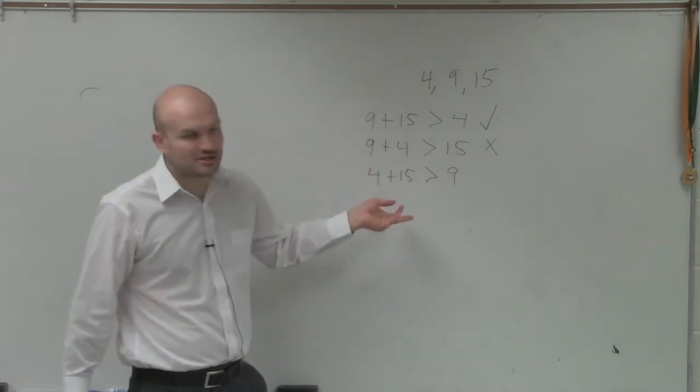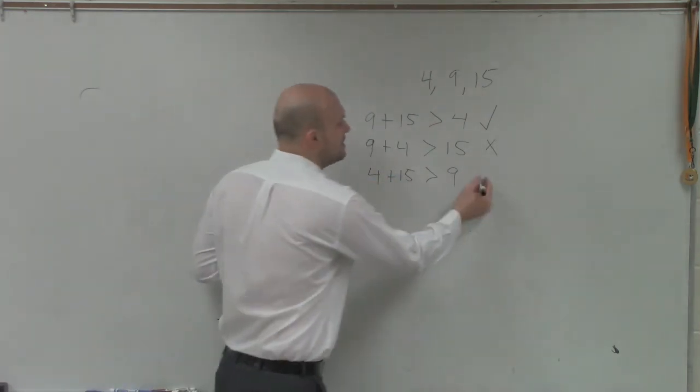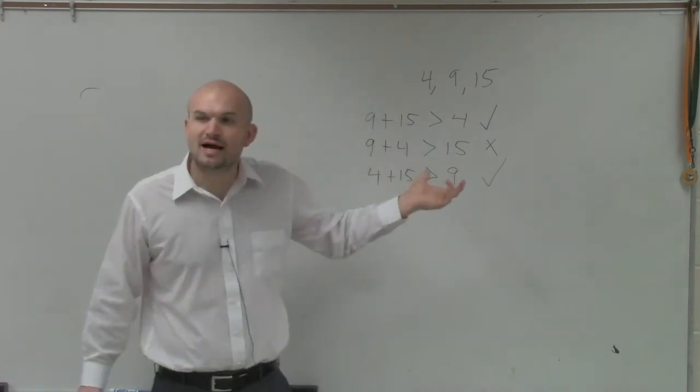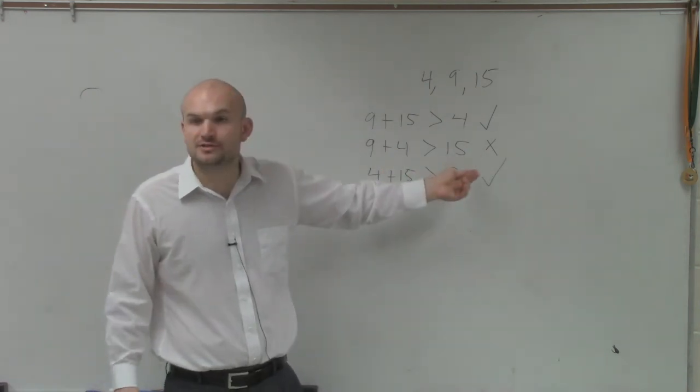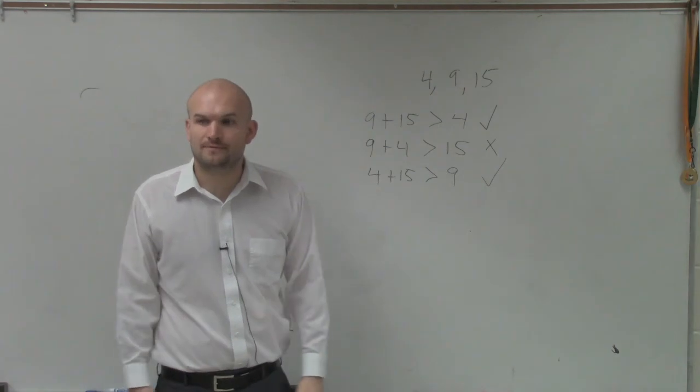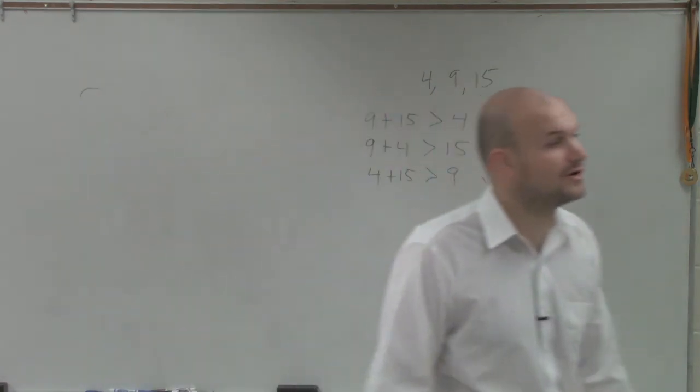And we don't really need to check this one because we already have a no, but that one works. But since we have two side lengths where the sum of them is not greater than the third side length, this is not a triangle. Or those side lengths you cannot create a triangle. All right, and that was it.